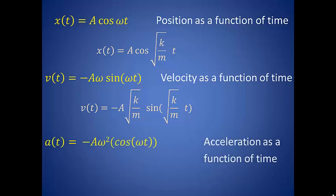And finally, acceleration as a function of time is the negative amplitude times omega squared times the cosine of omega t. And yes, one more time, we're going to take that omega, and we're going to substitute it in with the square root of the k over m.